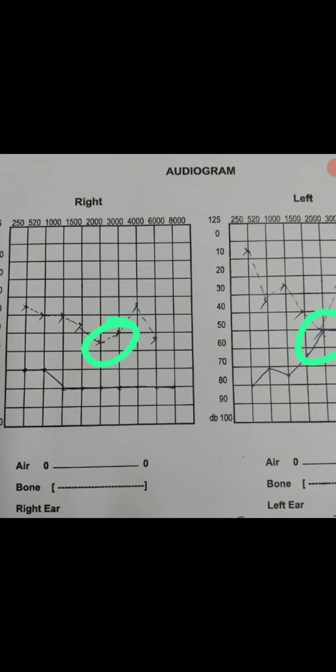As you can see, when the frequency is approaching approximately around 1500 to 2000 Hz, at that time there is a depression that's called the Carhartt's notch. This is seen in audiogram, especially in bone conduction audiogram.